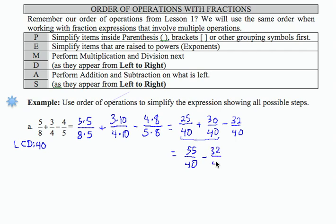Now I have a subtraction with like denominators. The result of this subtraction will be 23 over 40. There are no common factors between 23 and 40. Therefore, this is my final result.